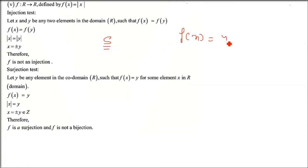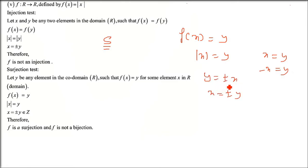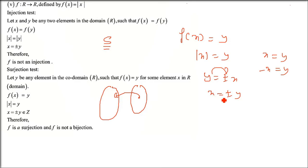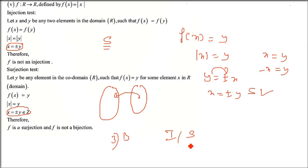Checking surjection for f(x) = |x|: setting |x| = y gives x = ±y, meaning for every y there exists some x (positive or negative). Every value in the second set has a pre-image. So it is surjective. Since it was not injective but was surjective, it is not bijective.